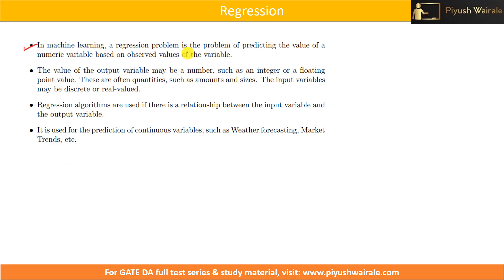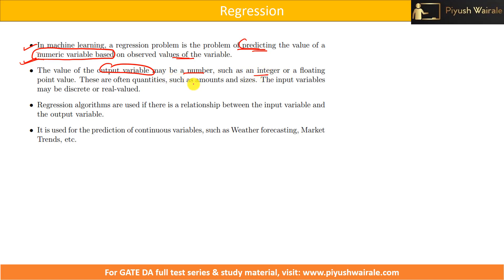In machine learning, a regression problem is the problem of predicting the value of a numerical variable. In regression, we are predicting the value of a numerical variable based on observed values. In classification, the output variable is a finite set of outputs, but in regression we predict a numeric-valued output — such as an integer or a floating point value — often representing quantities such as amounts and sizes. The input variable may be discrete or real valued.